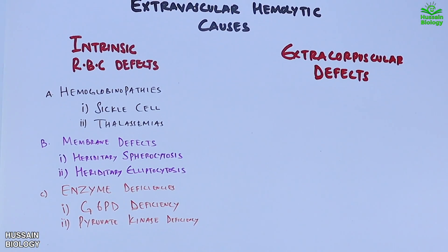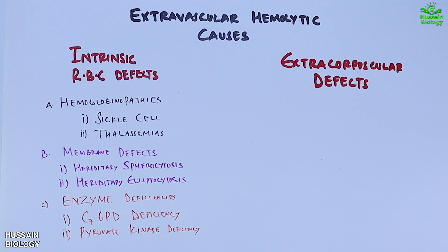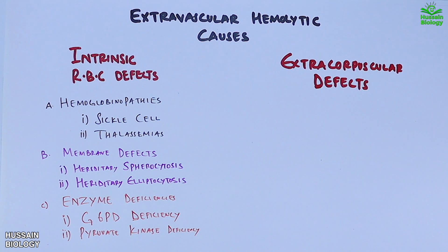It must be noted that G6PD — glucose-6-phosphate dehydrogenase — is an important enzyme in protecting RBCs. It is the key antioxidative enzyme for RBCs, eliminating reactive oxygen species that can destroy the RBCs.